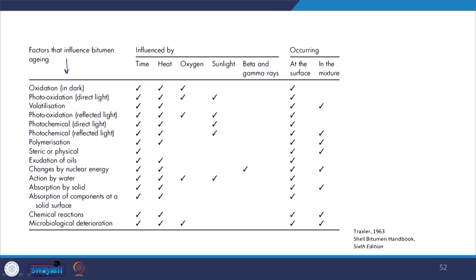The Shell Bitumen Handbook lists factors affecting bitumen aging in its first column — oxidation, photo-oxidation, volatilization, polymerization, steric or physical hardening, and so on. These factors are in turn influenced by parameters such as exposure time, temperature, UV radiations, and the position of the mix in the pavement — whether aging is happening at the surface or within the mixture.